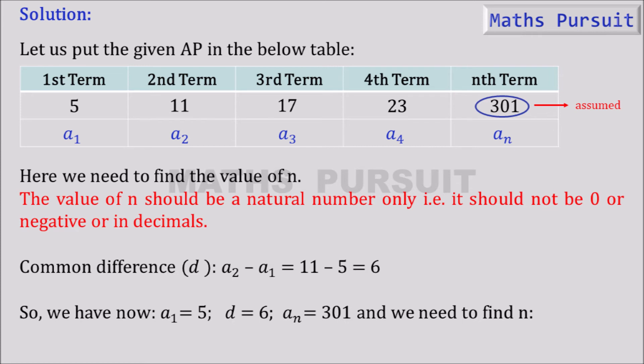So we have now a1 is equal to 5, that means first term is 5, common difference is equal to 6, and an that is equal to 301 which we have assumed, and we need to find n.